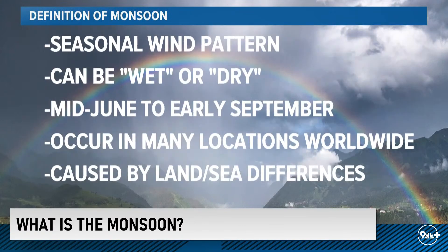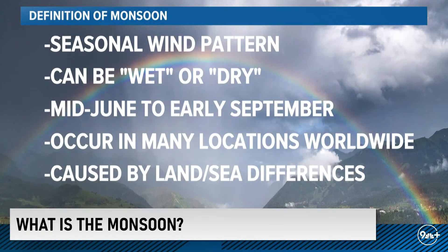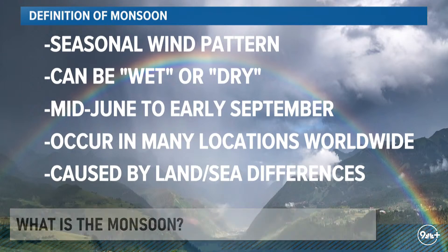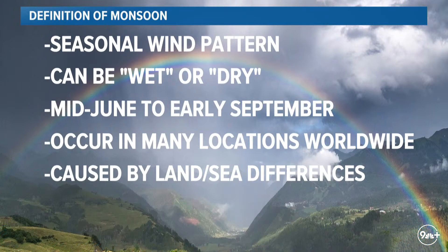The definition of a monsoon: it's a seasonal wind pattern that we see during the mid to late summer and early part of fall. It can be wet or it can be dry, but usually we associate the monsoon with a lot of wet weather, with rain. That's because the origin of the wind direction tends to come from oceans or bodies of water, which often means a lot of rain for us.